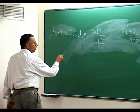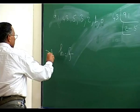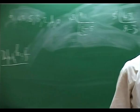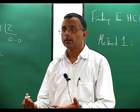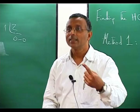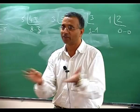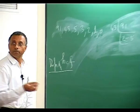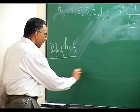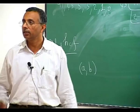Let us look at the definition of HCF. Can you give me a definition of HCF, the highest common factor? It divides both, and if anything else divides both, then it divides this. That is the usual definition of HCF. If a and b are integers, the HCF is denoted (a, b). I could look at the set {ax + by : x, y ∈ ℤ} as x and y vary over all integers.